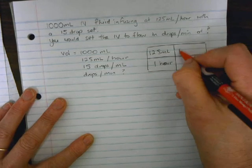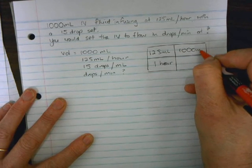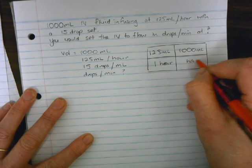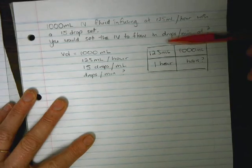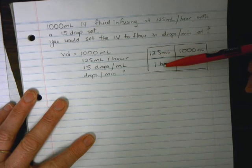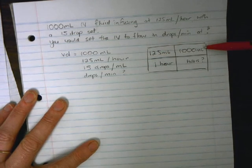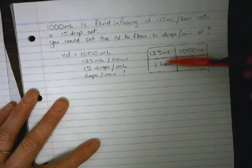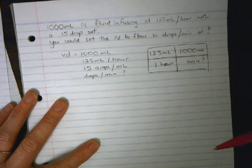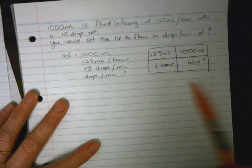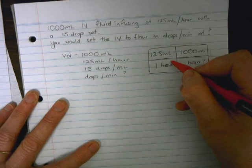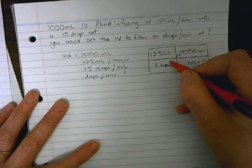We're trying to work out how long 1000 mL will take, how many hours. Our ratio is 125 mL per hour, so 1000 mL will be infusing at the same rate of 125 mL per hour.